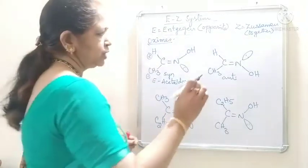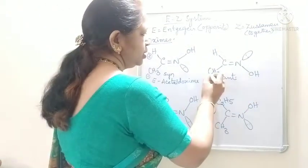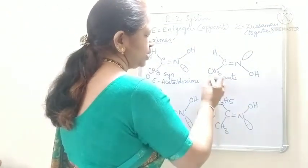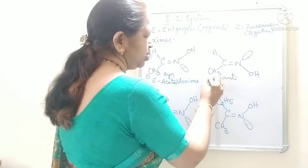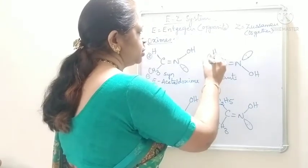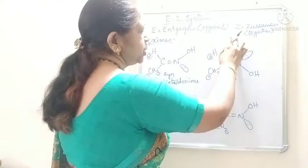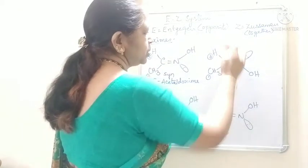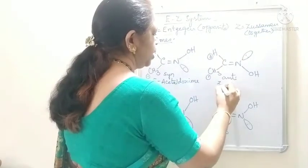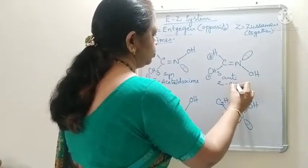Now, first priority is OH and CH3. This OH and first priority group CH3 are lying on the same side. So, which configuration? It is Z configuration. It is Z acetaldoxime.